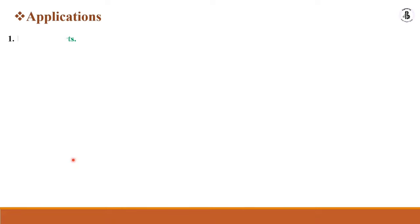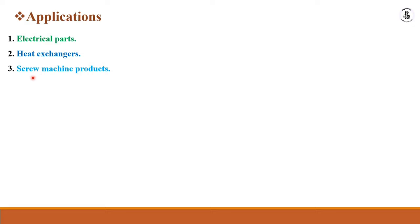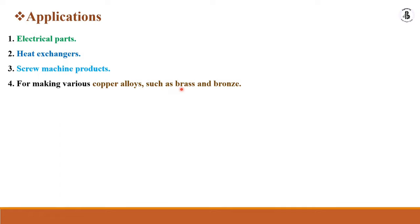After properties, let us look at different applications. Copper is used in electrical parts because of its good conductivity and is used in many appliances. It is used in heat exchangers to exchange heat between two mediums. It is also used in screw machine products and for making various copper alloys such as brass and bronze, which we will be discussing later in this video.